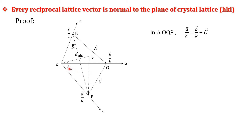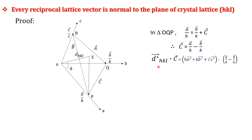We find the result of the scalar product of reciprocal lattice vector d* hkl and any vector lying in the plane p q r — that vector may be vector c or vector a. Hence we find d* hkl · vector c. We substitute d* hkl and vector c and take the dot product: d* hkl = h·a* + k·b* + l·c*, and vector c from the triangle is a/h − b/k. We put that bracket here and simplify the dot product.